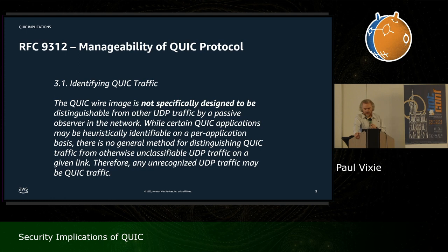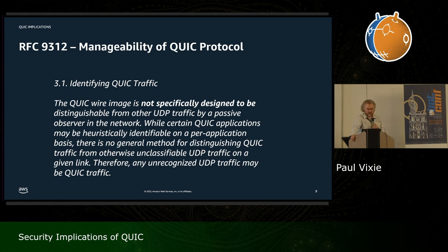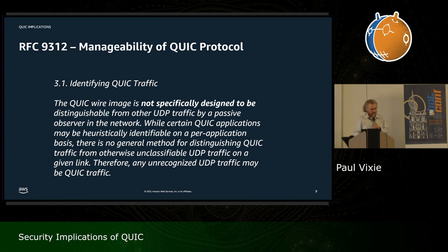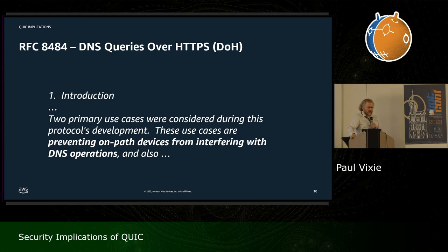I participated in some of these working groups and took exception to the language in RFC 9312 that says the QUIC wire image 'is not specifically designed to be distinguishable from other UDP traffic.' I wanted it to say it 'is specifically designed to be indistinguishable from other UDP traffic,' because that is both true and what is recommended by RFCs 9890 and 7258. But I lost that argument. If you read RFC 9312 this language is unchanged — I'm not sure what that means about the psychology of the internet protocol development community, other than it's clearly human.